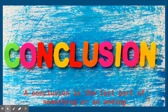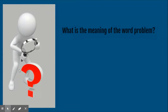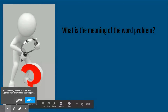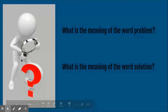A conclusion is the last part of something — an ending. Yesterday we were writing a conclusion to a short passage where they started playing football inside the house. Let's also review: what is the meaning of the word 'problem'? Yes — a problem is something that needs to be solved. And 'solution'? The solution is the resolution, or how the problem is solved.